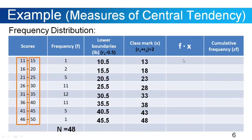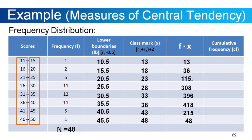Now let's go to the fifth column: the product of f and x. On the first row: 1 times 13 equals 13. On the second row: 2 times 18 gives 36. On the third row: 5 times 23 gives 115, and so on. The next step is we're going to sum the values of fx. The summation of fx is equal to 1549.